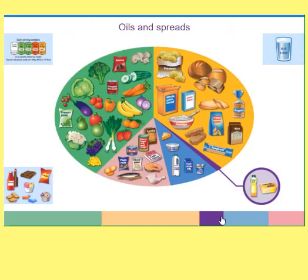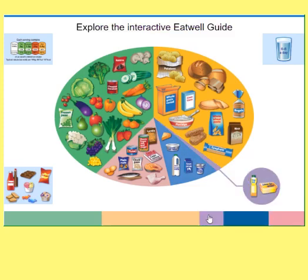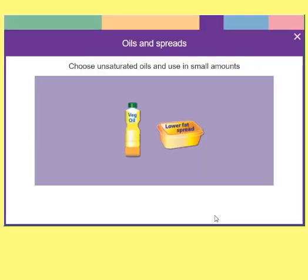The next section is the small one — oils and spreads. It says to choose unsaturated oils and use in small amounts, and the reason for that is because it is high in fat and calories.